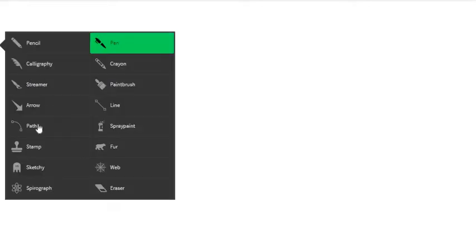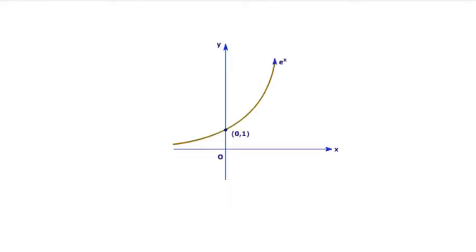Euler's number can be found in many places, especially in nature. But, mathematicians like it because of its properties. Here, I'll put the graph of E to the X. So, the graph of E to the X.